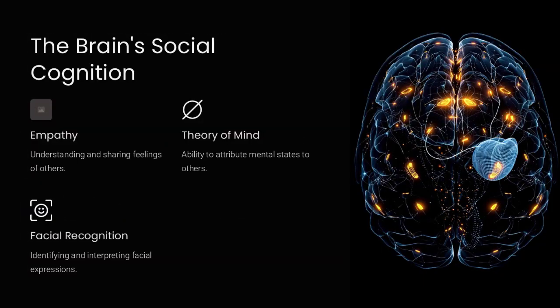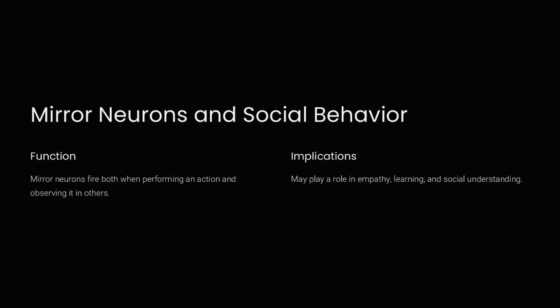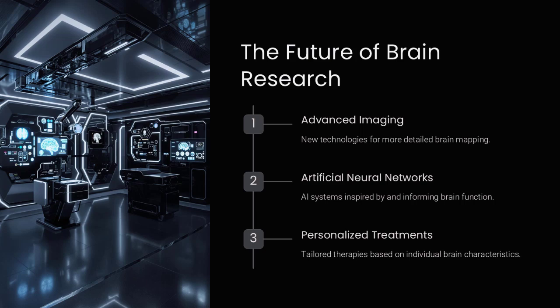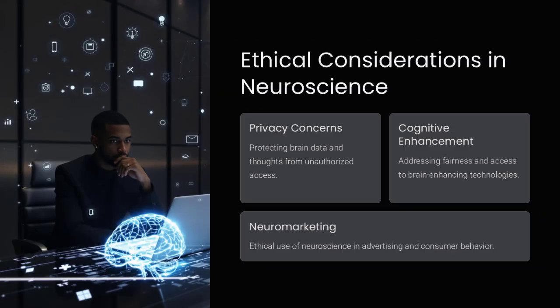But what if we could remove those constraints? Could AI-based neural augmentation give us perfect memory? Could quantum computing unlock new levels of intelligence? Or will the laws of physics always impose an upper ceiling on human cognitive capacity?